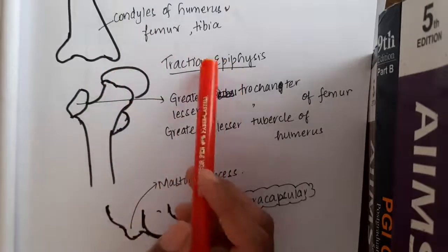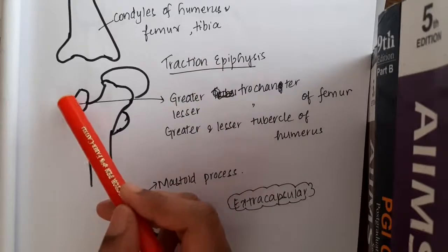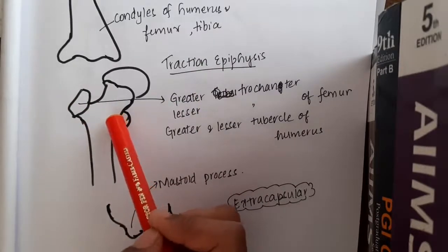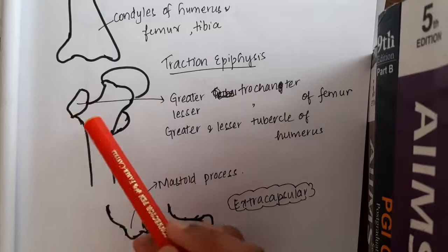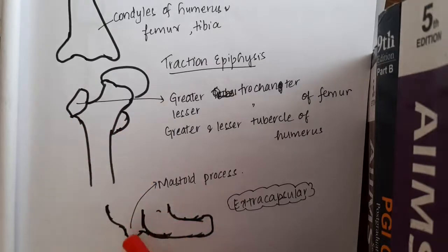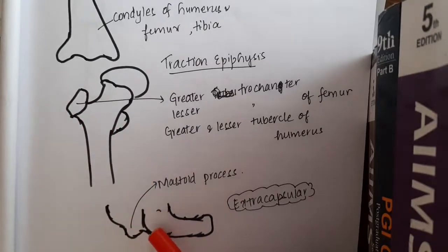But traction epiphysis is greater trochanter of femur or lesser trochanter of femur and also greater and lesser tubercles of humerus and also the mastoid process.